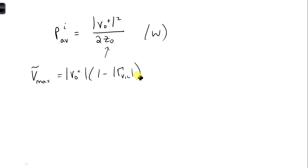We are given V max, and we now know the magnitude of the reflection coefficient, so we can solve for V naught plus.